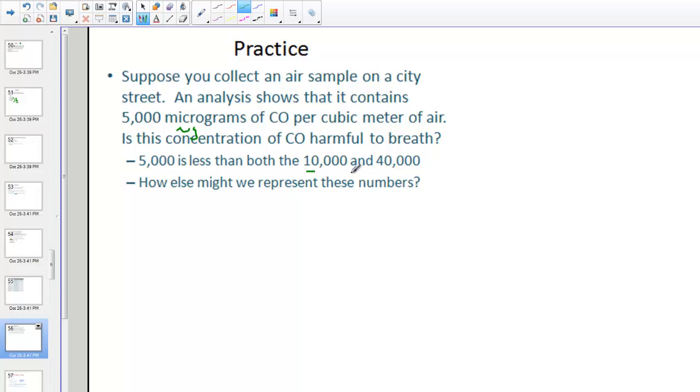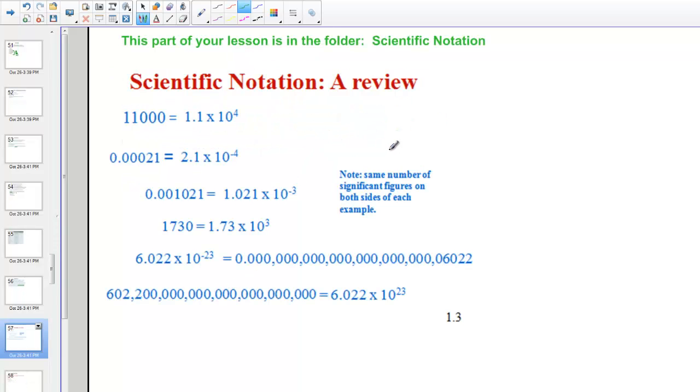But this brings up our kind of our next lesson on what might be a better way to represent these numbers. We have 10,000, 40,000, 5,000, and it brings us to our lesson on what's called scientific notation. And at this point, you're going to pause this lesson and go into the next video lesson and learn all about how scientists write out such very, very, very large numbers or very, very, very tiny numbers using scientific notation. So pause the lesson here and go on to your next scientific notation lesson.